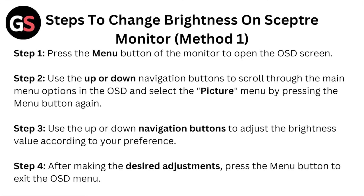Steps to change the brightness on the Sceptre monitor, method number one. Step one: press the menu button on the monitor to open the OSD screen. Step two: use the up or down navigator buttons to scroll the main menu options in the OSD screen and select the picture menu by pressing the menu button again.